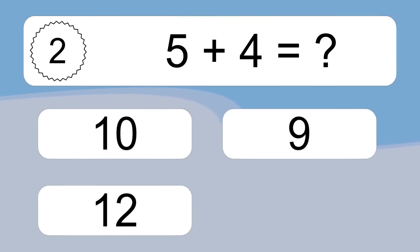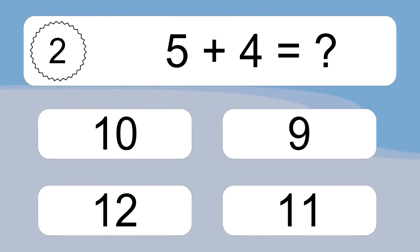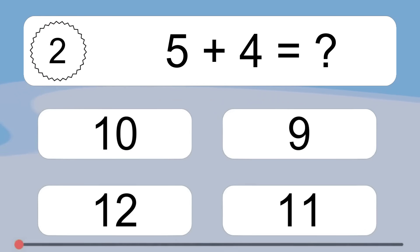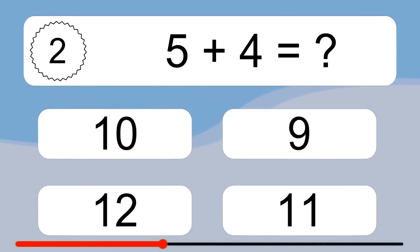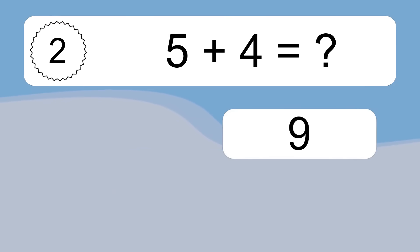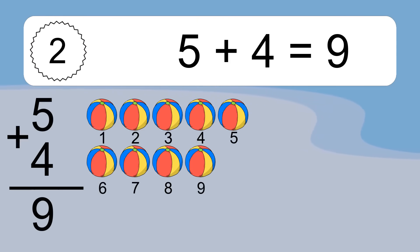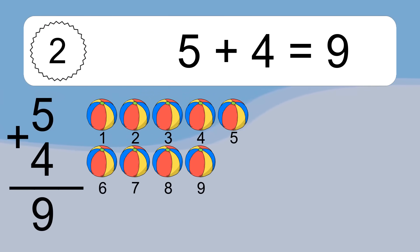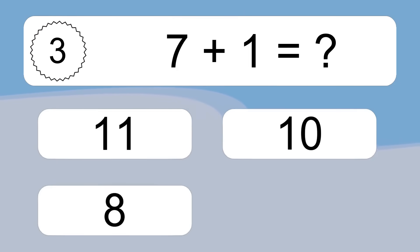5 plus 4 equals what? 5 plus 4 equals 9. Let's count it: 1, 2, 3, 4, 5, 6, 7, 8, 9.